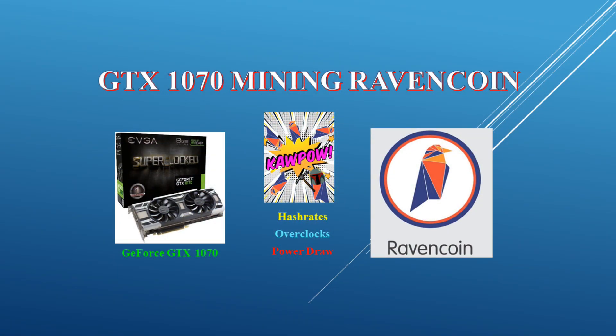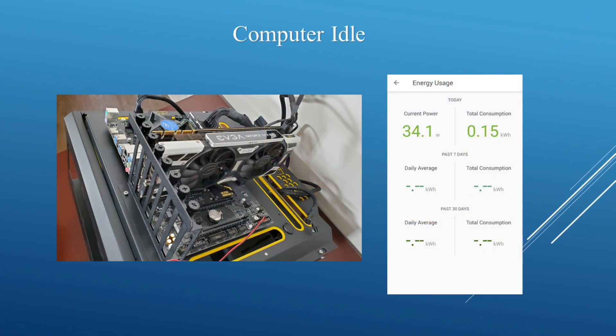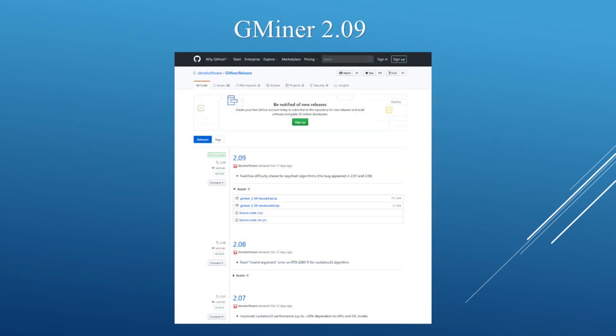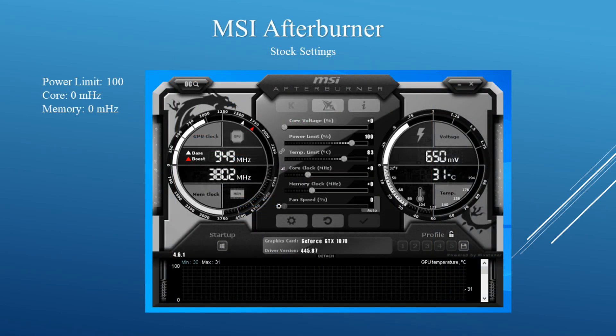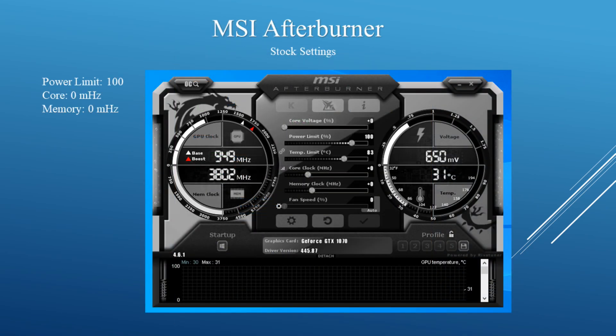The GTX 1070 I'm going to test is from EVGA, and I'm going to share my results mining Ravencoin on the new Kapow algorithm. This is my test bench, and my GTX 1070 does idle around 34 watts. The miner program I'm using is Gminer version 2.09, and the overclock program I'm using is MSI Afterburner. Let's first check out the stock settings.